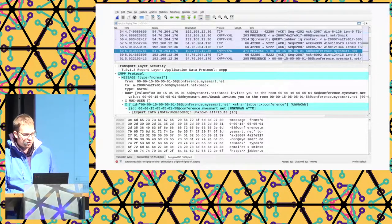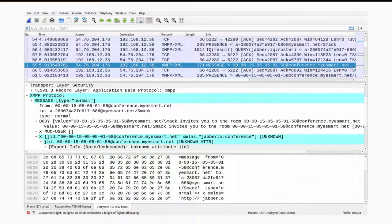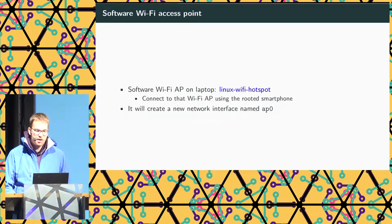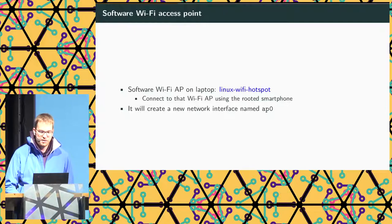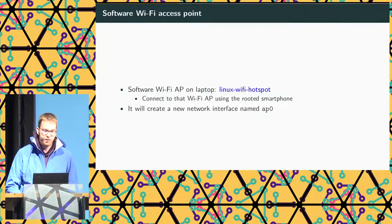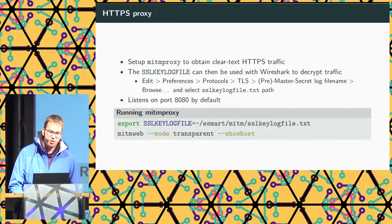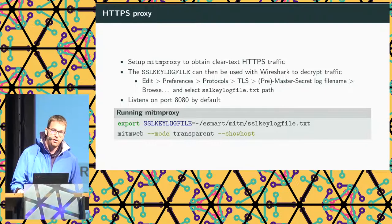Here we have a Wireshark screenshot showing an XMPP message in the clear — the tablet sending an invitation to a private room on the XMPP server. To set this up, I created a software Wi-Fi access point on my laptop, connected the rooted smartphone to it, and captured traffic. For HTTPS, I instructed Mitmproxy to save TLS handshakes to an SSL keylog file, then loaded that file in Wireshark's preferences to decrypt the traffic.